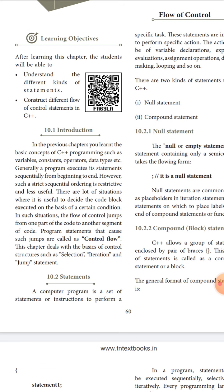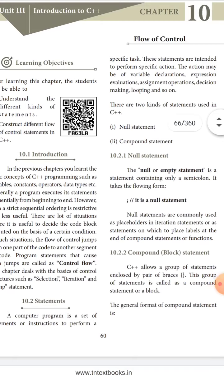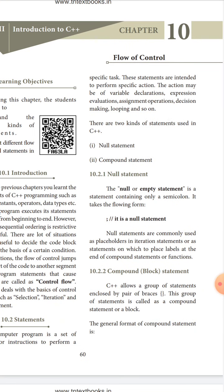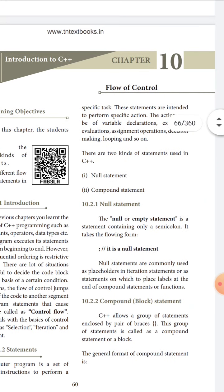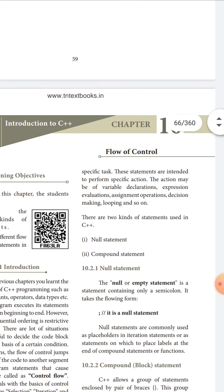A computer program is a set of statements or instructions given to perform a specific task. The instructions we give to the computer cause it to perform specific tasks and actions.